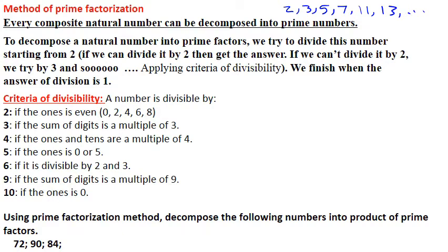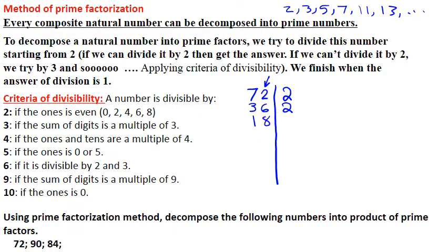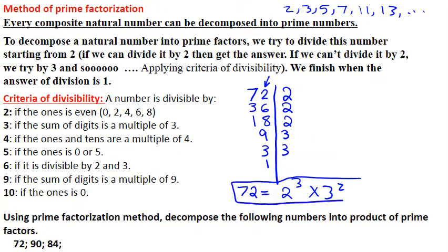Using the prime factorization method, we decompose numbers into a product of prime factors. Let's do 72 together. We draw a vertical line. Can we divide 72 by 2? Yes, because the ones digit is even. Dividing by 2 gives 36. 36 divided by 2 gives 18. 18 divided by 2 gives 9. Now 9 cannot be divided by 2, so we try by 3. 9 divided by 3 is 3, and 3 divided by 3 is 1. So 72 as a product of prime factors is 2 cubed times 3 squared. We put the answer inside a box.